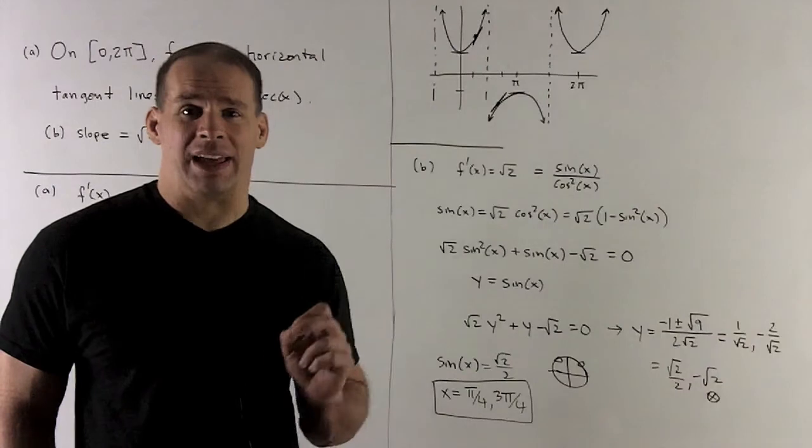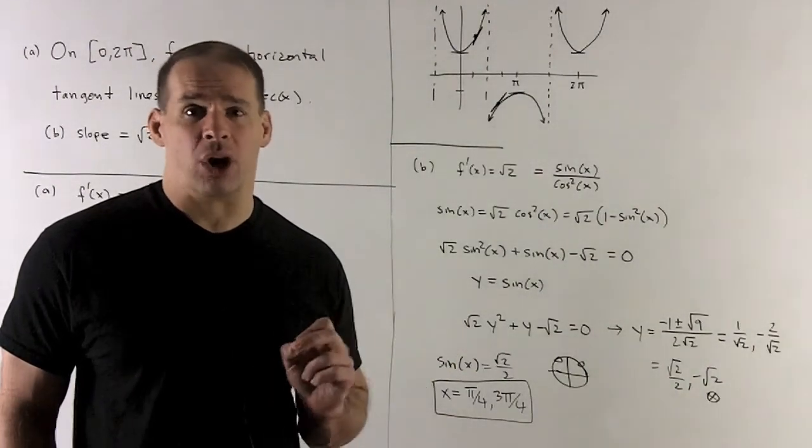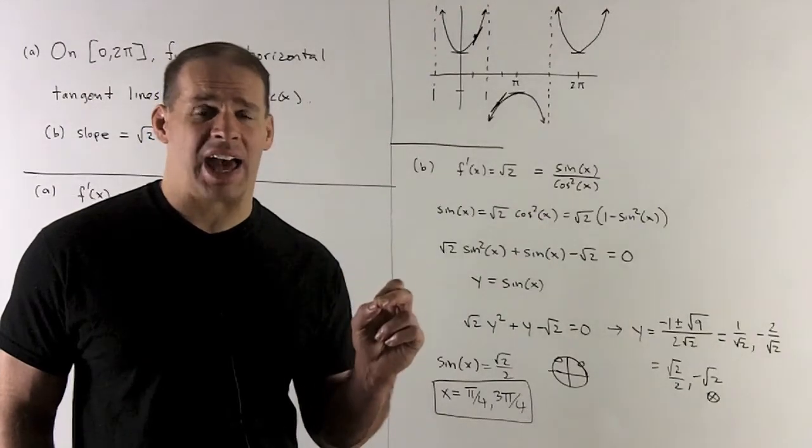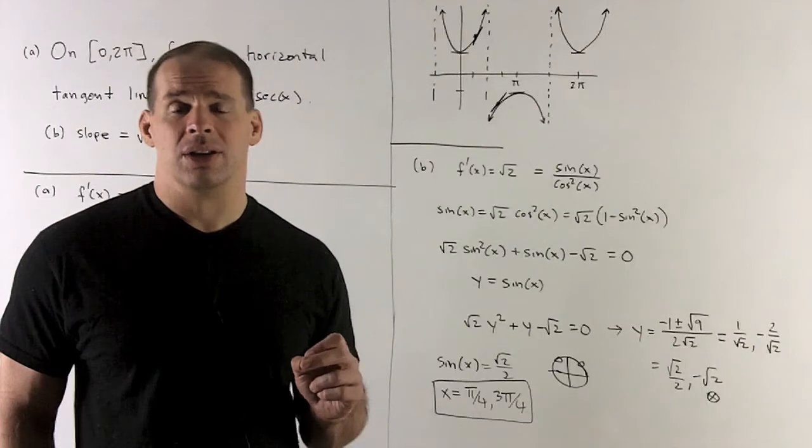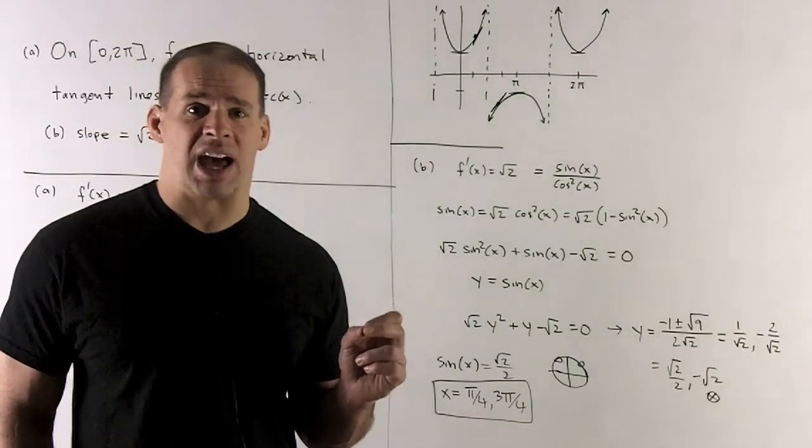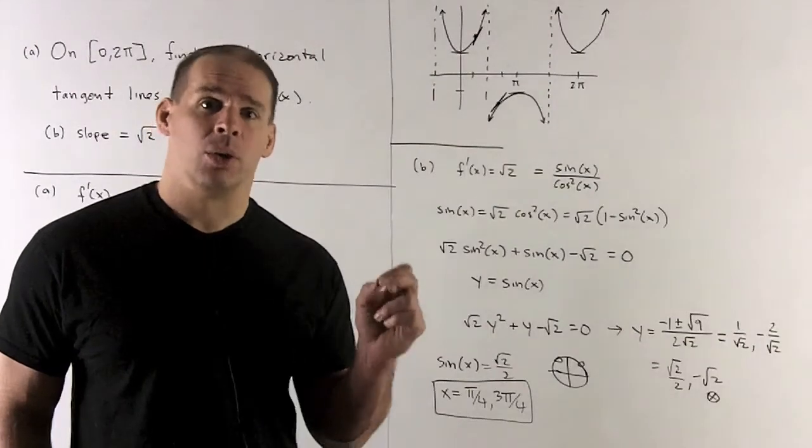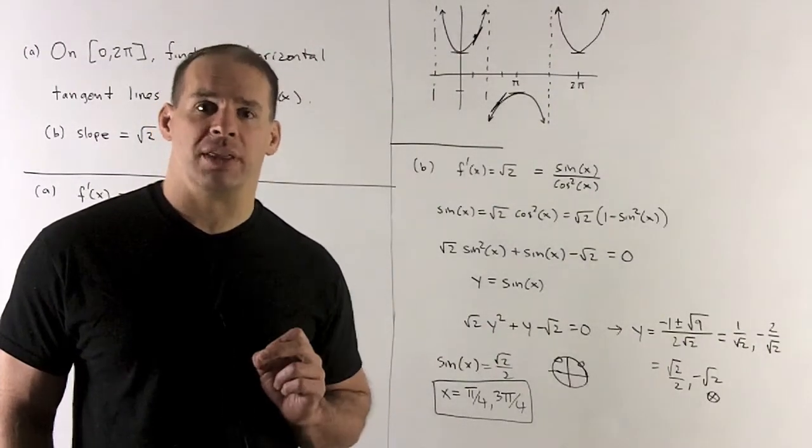If I put back in sin(x) for y, you'll notice the first one's familiar, the second one's going to be garbage. I can never have sine bigger than 1 or less than -1. √2 is roughly 1.4, so I can never have a sine equal to -1.4 and so on. So we're only interested in the first answer.